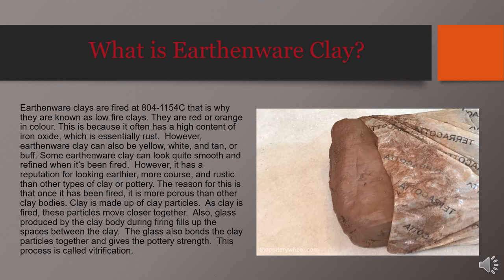Earthenware clays are fired at 804 to 1154 degrees Celsius, which is why they are known as low-fire clays. They are usually red or orange in color due to a high content of iron oxide, which is essentially rust. However, earthenware clay can also be yellow, white, tan, or buff in color. Some earthenware clay can look quite smooth and refined once fired, but it has a reputation for looking more coarse and rustic than other clay types, because once fired it becomes more porous.